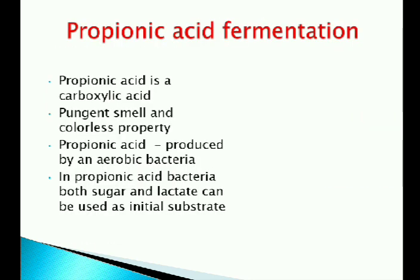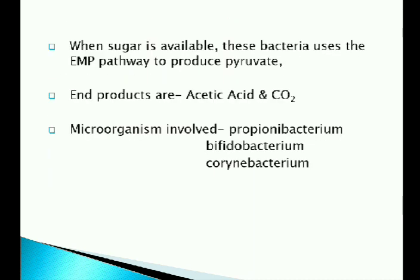Propionic acid fermentation: Propionic acid is a carboxylic acid with a pungent smell and colorless property. Propionic acid fermentation is carried out by anaerobic bacteria. In propionic acid bacteria, both sugars and lactates can be used as the initial substrates. When sugar is available, these bacteria use the EMP pathway to produce pyruvate. The pyruvate is carboxylated to oxaloacetate by methylmalonyl coenzyme A and reduced to propionate through malate, fumarate and succinate. The other end products are acetic acid and carbon dioxide. Microorganisms involved are Propionibacterium, Bifidobacterium and Corynebacterium. Propionibacteria possess cytochrome and catalase and are natural inhabitants of the rumen of herbivorous cattle.